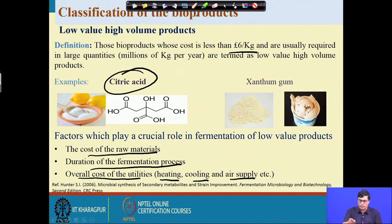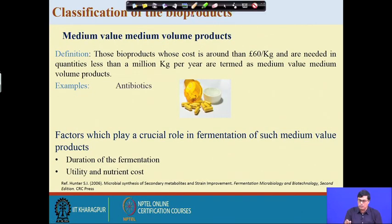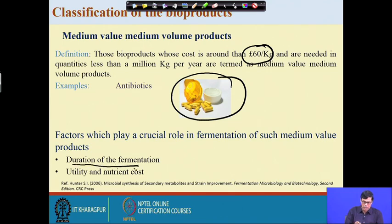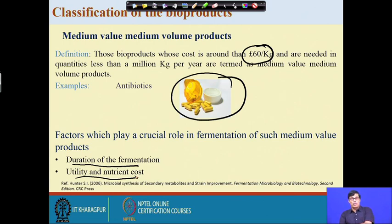Medium value medium volume products have a cost of around 60 pounds per kg, and examples include different antibiotics — particularly penicillin, which is largely used in daily life for killing gram-positive bacteria. When we have some kind of injury with pus formation, penicillin can rectify that. Factors affecting this process include the duration of fermentation, utilities, and nutrient costs — for example, penicillin production requires not only a carbon source like glucose and a nitrogen source, but also a precursor such as phenylacetic acid or phenoxyacetic acid.